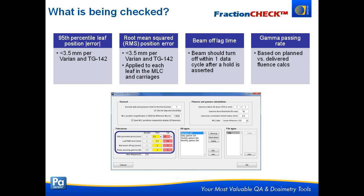These first items are all machine performance related — positioning errors of MLCs — and they're very good for machine QA, but they don't necessarily tell us what happened to our patient. Just knowing we have a 2 mm error in an MLC leaf isn't enough. What we do behind the scenes is calculate full fluences and a passing rate of planned versus delivered fluence calculations, translating all of these machine errors to say: what did that actually do to my patient's delivery?